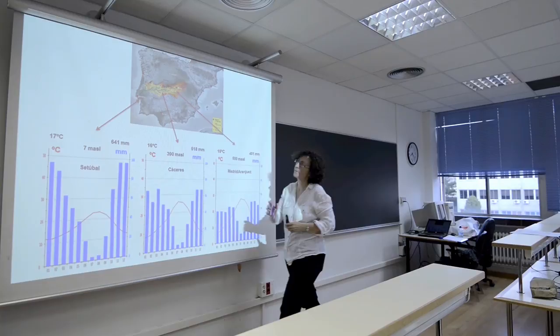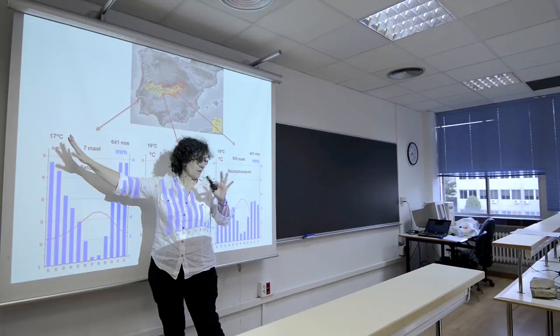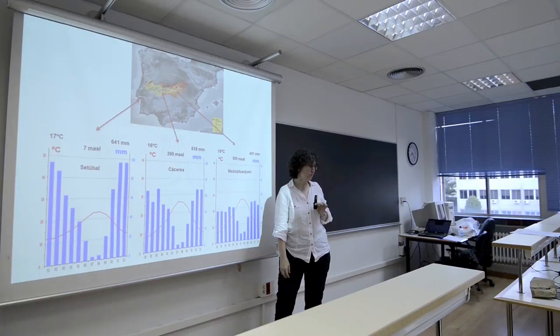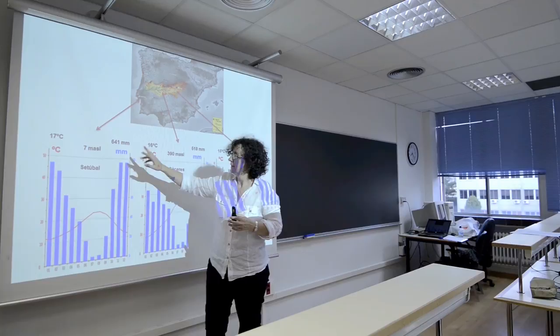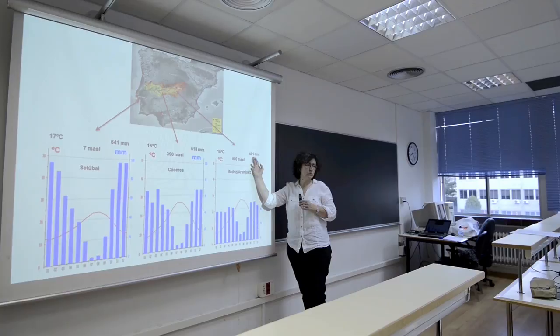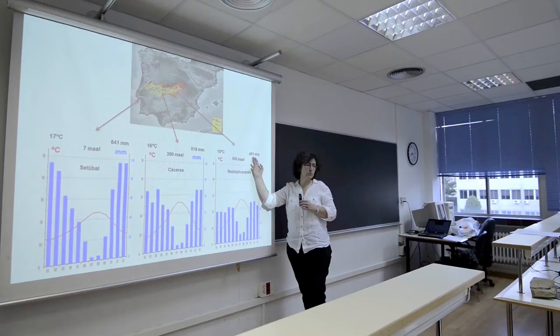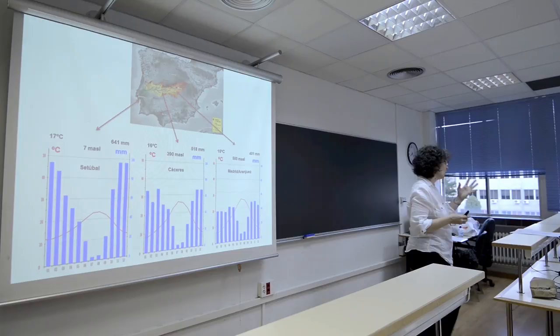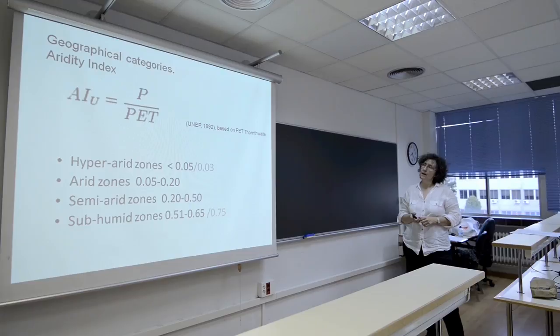You can see here the figures. In this area around Setúbal, the mean annual temperature is 17 degrees Celsius. At the midpoint of your trip, we have 16 degrees, and in Madrid we have 15 degrees on average. It seems the difference is not too much. But we have 640 millimeters of annual rainfall here, 518 millimeters in the center, and around 400 millimeters in Madrid. This small difference has important consequences for soil, landscape, and the way people try to manage the soil.